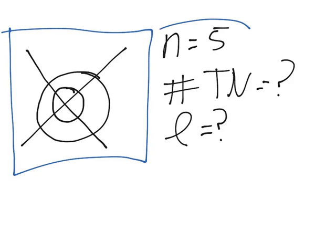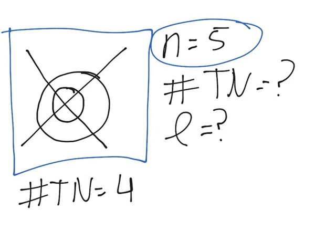N equals five, so the number of total nodes will be n minus one. That's pretty simple. That will be four. And you can just count them. There's two radial and two angular, so that's four.